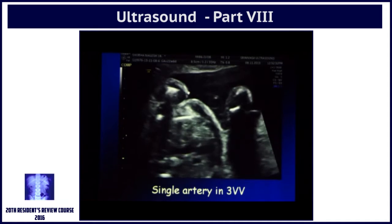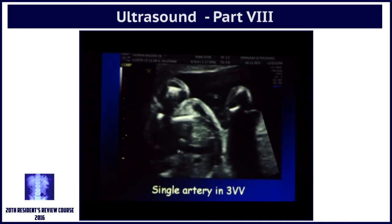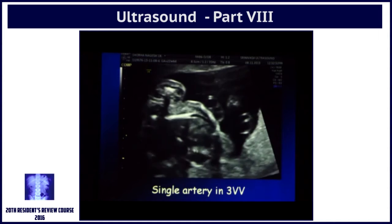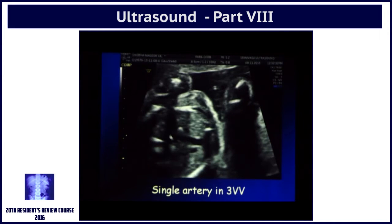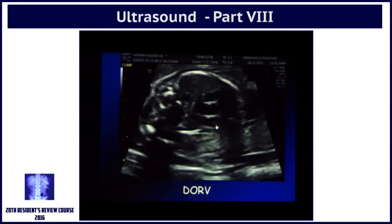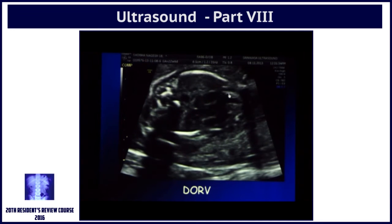This is a single artery. Can you see only the SVC and an artery which is arching or dividing? It is arching in the axial view, so this is possibly the aorta. If you come back you will see that that is the aorta, that is the pulmonary artery — there is overriding, and there is a DORV with malposed vessels.